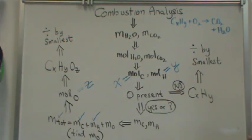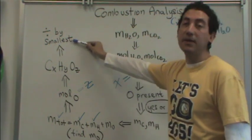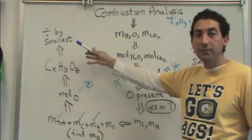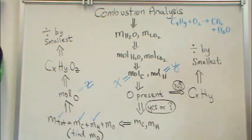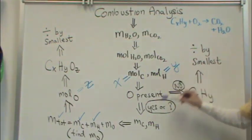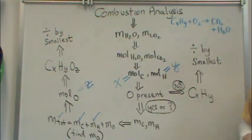And so you have CxHyOz. And just like before, you divide by the smallest, because of the law of multiple proportions, because you want to make X, Y, and Z whole numbers. So this is the process you go through if there is oxygen.